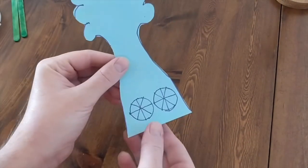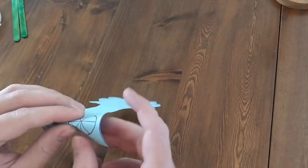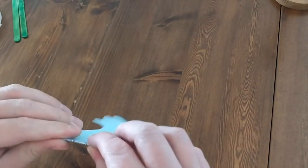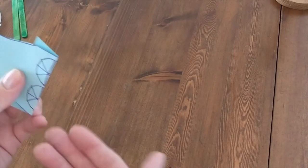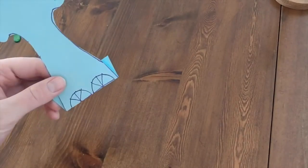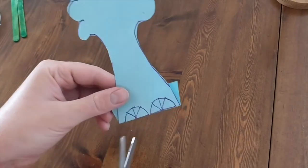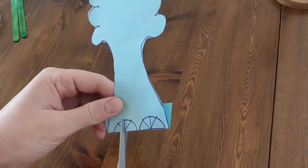Now that we've cut out our puppet we need to cut out some finger holes. So first of all fold across your circles like so and then get some scissors and just snip up those lines that we drew earlier.